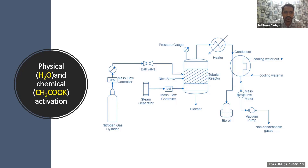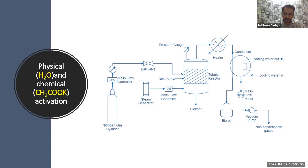We assessed both single-step and two-step activation processes. In the single-step activation process, we initially produce biochar from room temperature to 600°C under a nitrogen environment, then shift from nitrogen to steam and raise the temperature from 600 to 700°C, producing activated carbon at 700°C.